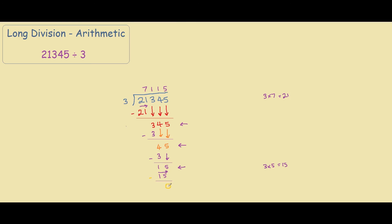The number 0 is what you want — it tells you that there's no remainder. So the answer to our problem is 7,115. And you can verify this by typing into your calculator 21,345 divided by 3, and you'll get 7,115.